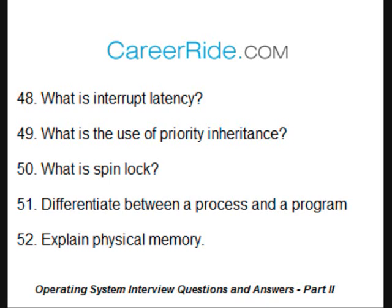Differentiate between a process and a program. A program is a set of instructions that are to perform a designated task. Whereas a process is an operation which takes the given instructions and performs the actions as per the code — the execution of instructions. A process is entirely dependent on a program. A process is a module that executes concurrently, whereas a program performs a task directly related to a user operation like word processing or executing presentation software.